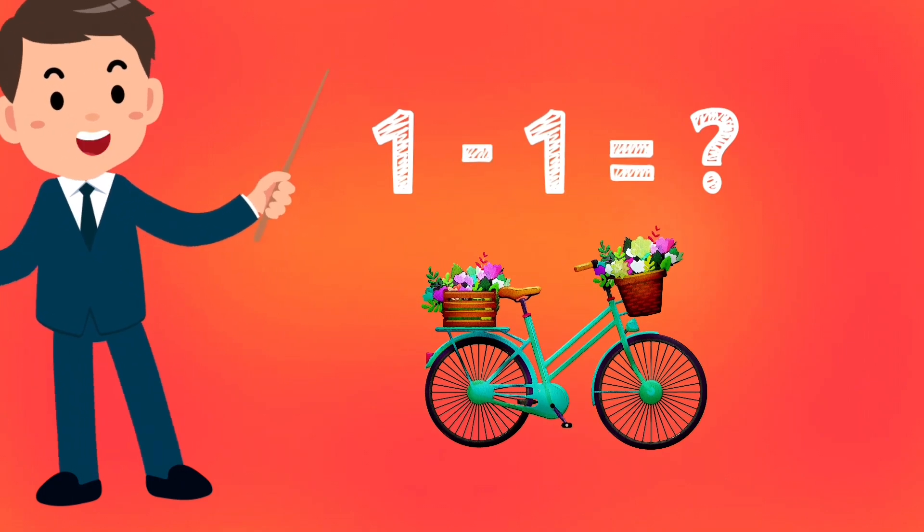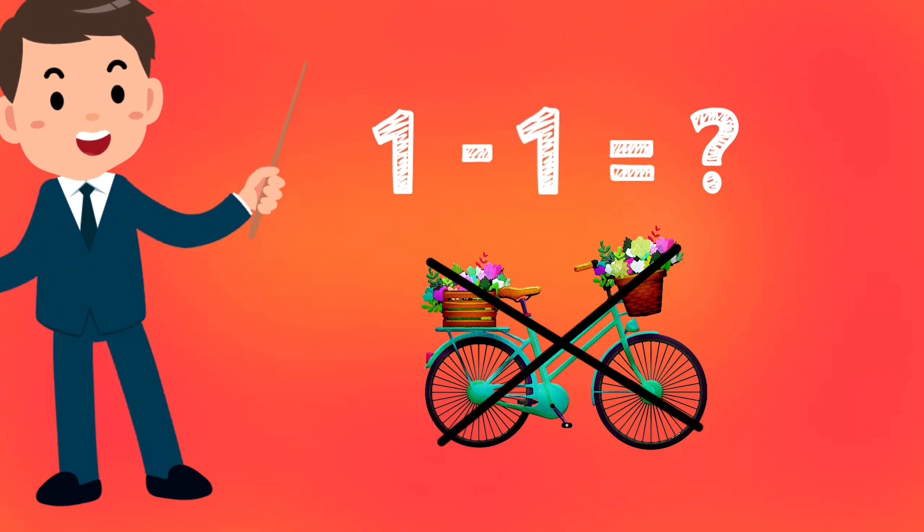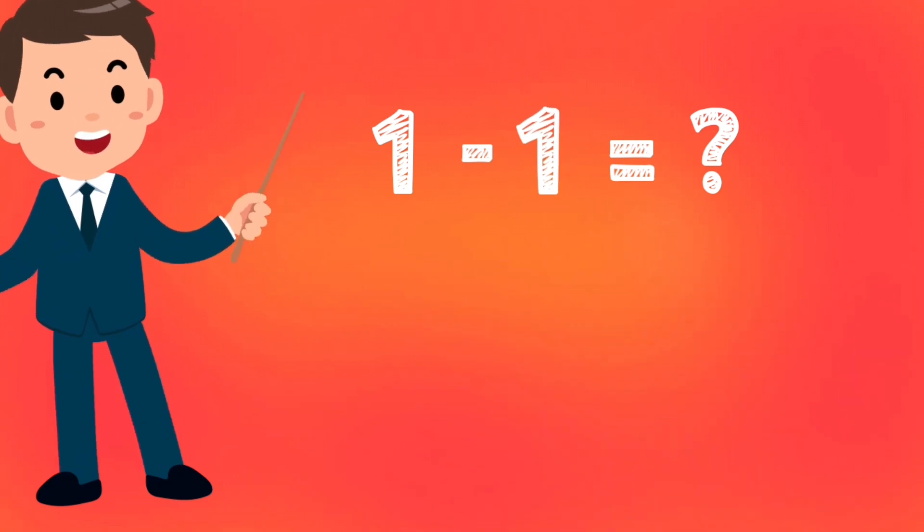One bicycle minus one bicycle. There is nothing left. Nothing means zero, so the answer is zero.